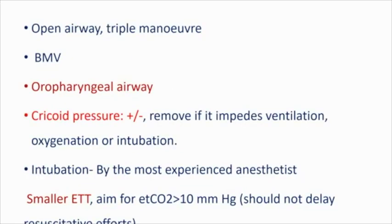For airway: open the airway, suction the patient if required, and bag-mask the patient. If you need to put an airway, use an oropharyngeal airway. If cricoid pressure has been applied — which is controversial in itself — remove it if it is impeding ventilation, oxygenation, or intubation. If intubation is warranted, it has to be done by the most experienced anesthetist inside the OT because you do not want multiple attempts. A smaller size endotracheal tube should be used, with the aim of ETCO2 at least 10 mmHg.